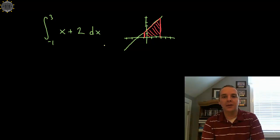So here we go. We want to compute the definite integral from minus 1 to 3 of the function x plus 2. x plus 2 is this linear function here and we're integrating from negative 1 up to 3 right here.